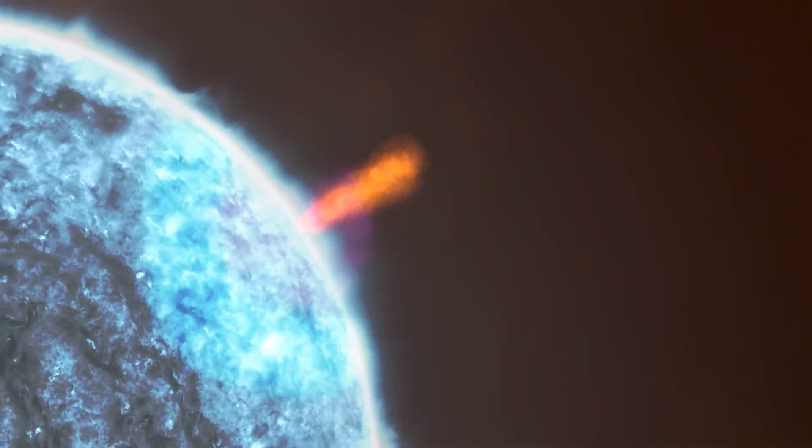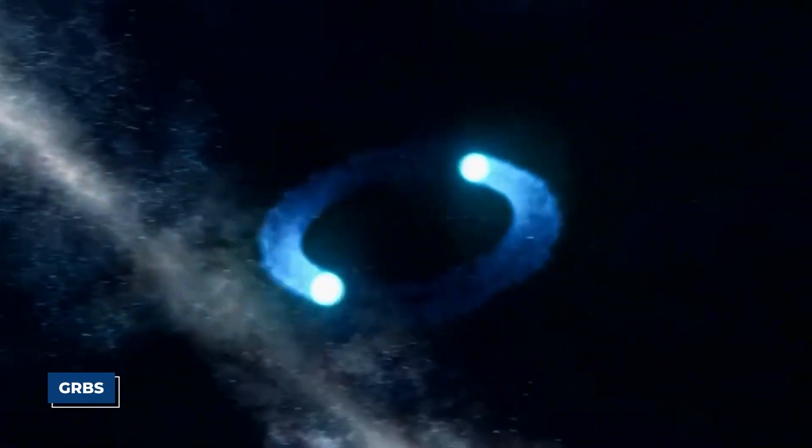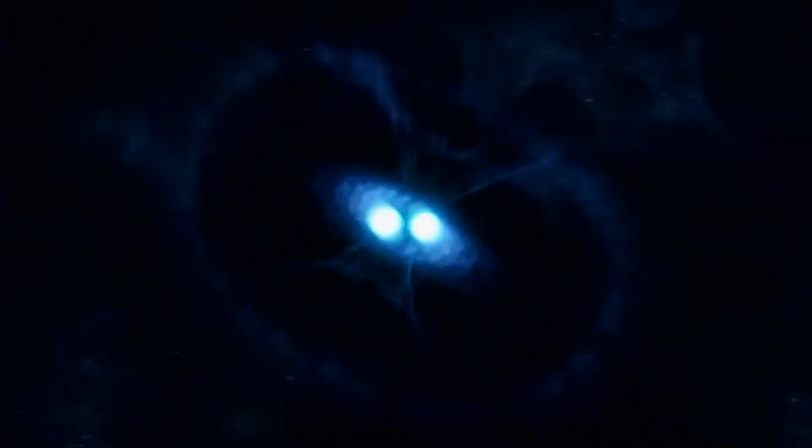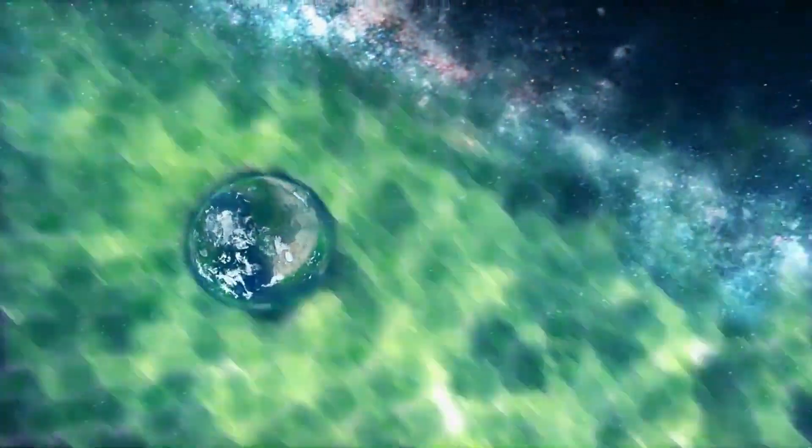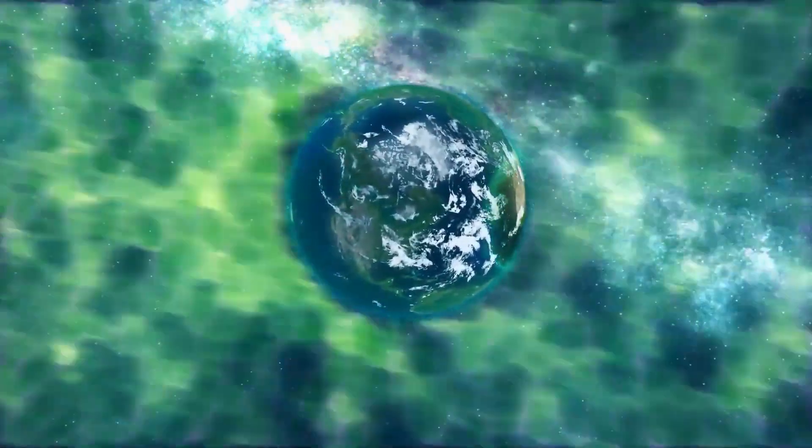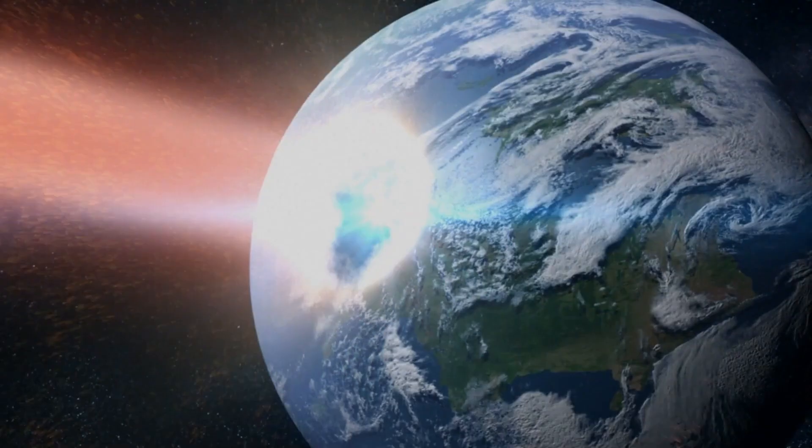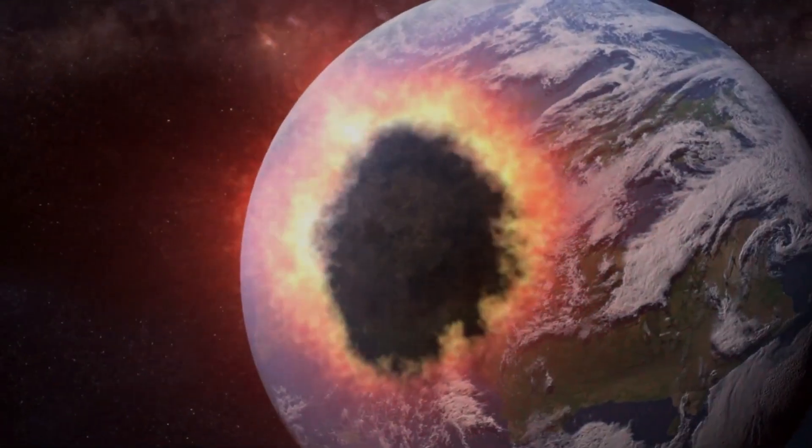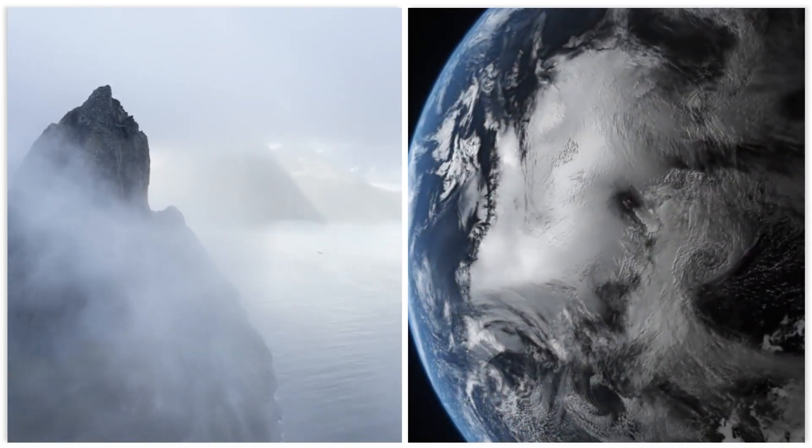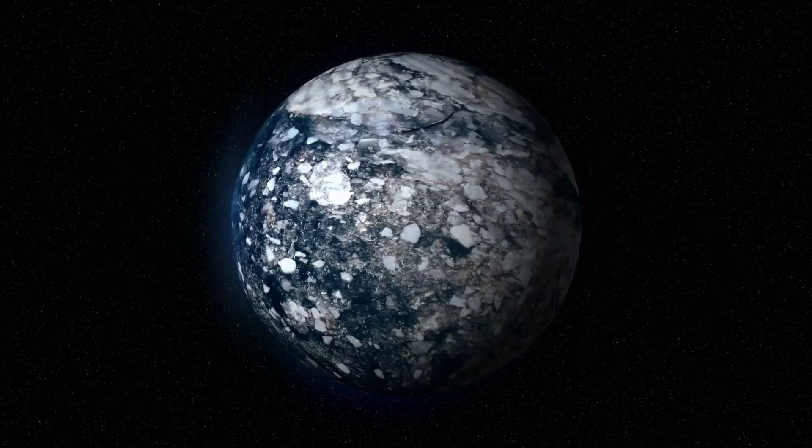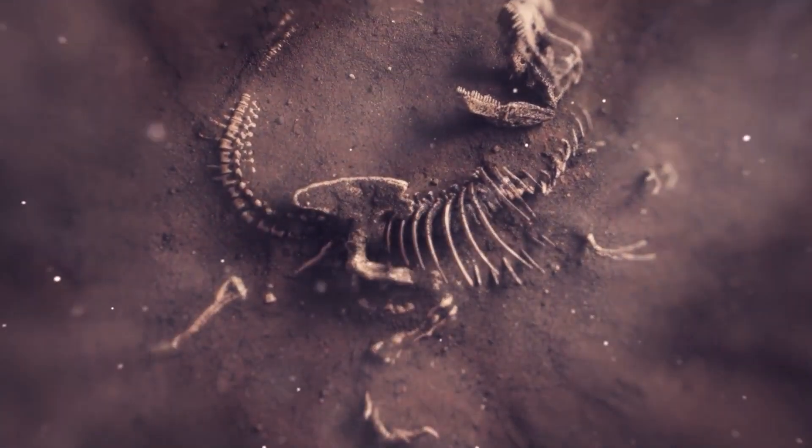But a gamma ray burst is even worse. These are the brightest and most powerful explosions in the universe, releasing more energy in a few seconds than our sun will in its entire 10 billion year life. GRBs come from collapsing giant stars or colliding neutron stars, and their energy shoots out in tight beams like a cosmic lighthouse. If Earth were caught in one of these beams from a relatively nearby GRB, say within a few thousand light years, it could sterilize one half of our planet in an instant. The gamma rays would mess with our atmosphere, changing oxygen and nitrogen into toxic gases, causing global cooling and eating away at the ozone layer for years. Scientists even think a GRB might have played a role in the late Ordovician mass extinction about 450 million years ago, wiping out two thirds of all animal life.